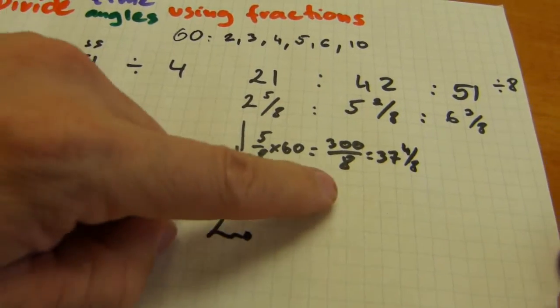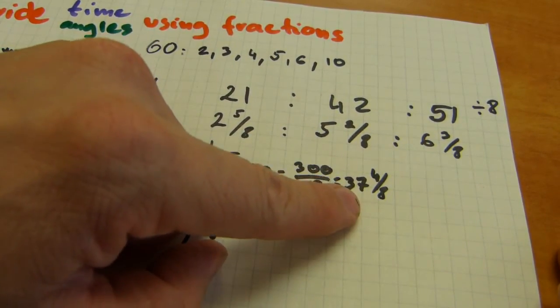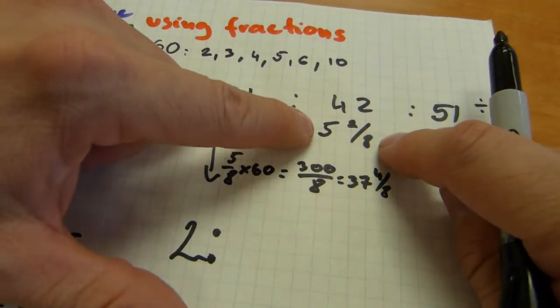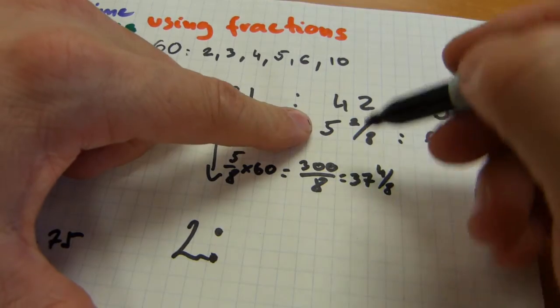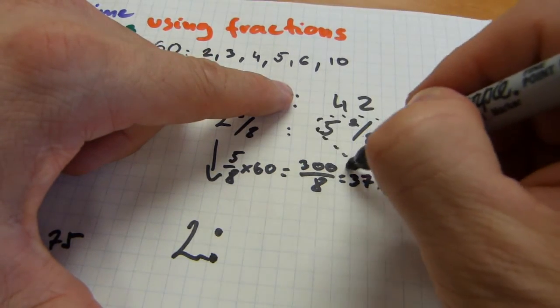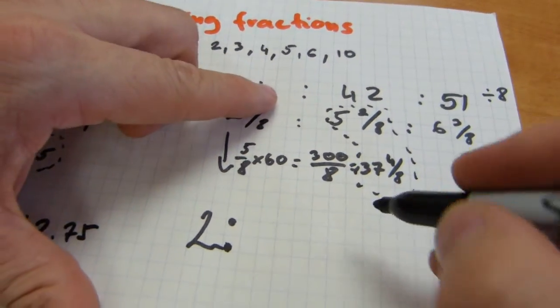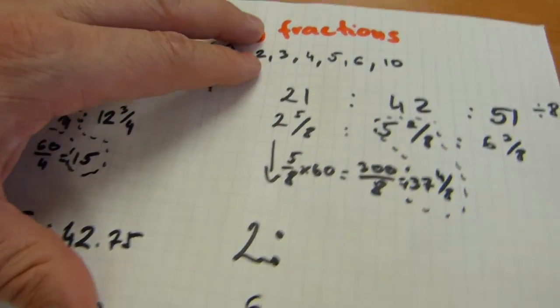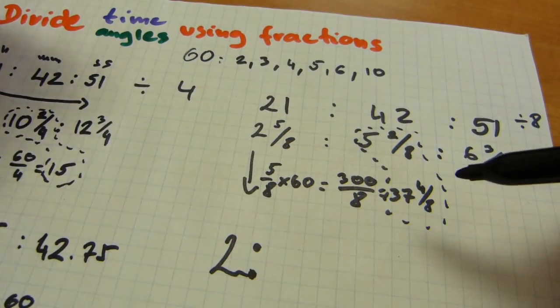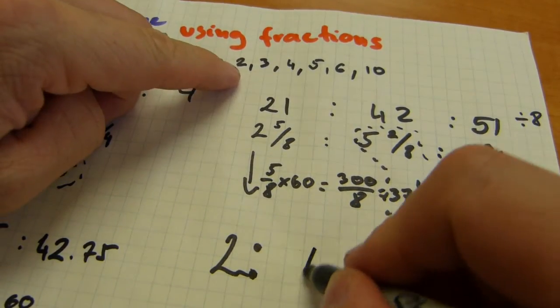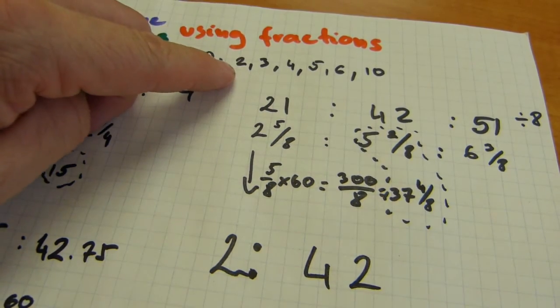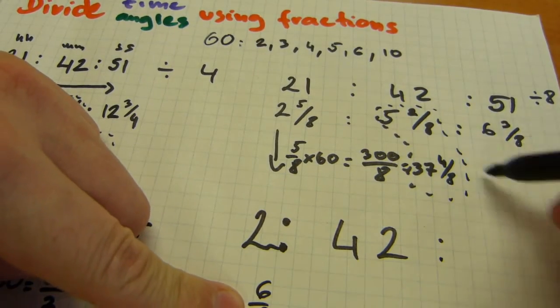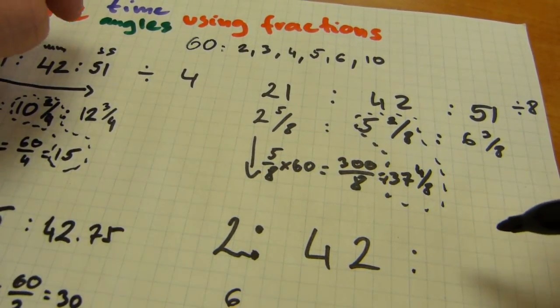We have to add 37 and 4 eighths and 5 and 2 eighths. When we add these two, 4 eighths plus 2 eighths is 6 eighths. Just leave it there. And 37 plus 5 is 42. So just write the 42 into the final answer. And the 6 eighths minutes needs to be dragged over into the seconds column and added to whatever is in there already.